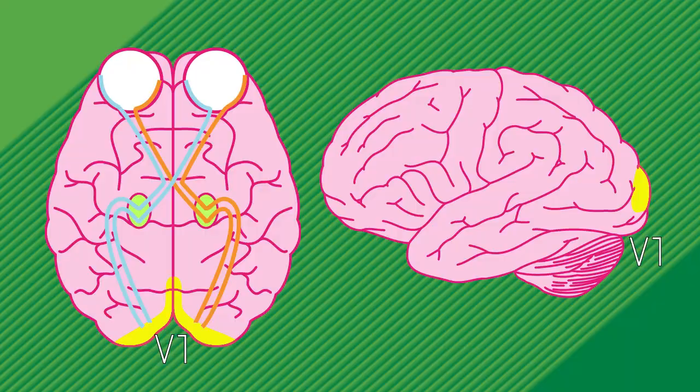V1 has a map of visual space imprinted on it. This means that there's a precise correspondence between a point in your subjective visual field and a location in your brain. V1 then projects onto an area called V2, where cells have many of the same properties as V1, plus some more complex coding.